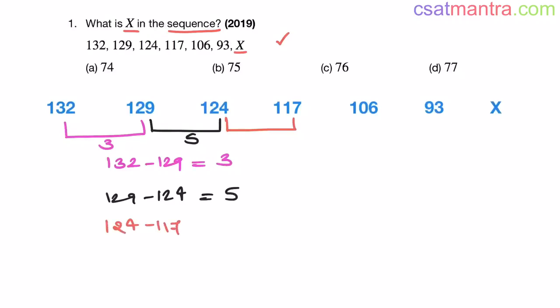Now 117 to 106, okay, this is 11. Now see, after 7, the next odd number is 9. We thought 9 should come here, but 11 came. My friends, now see, these are all prime numbers: 3, 5, 7, 11.